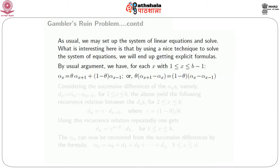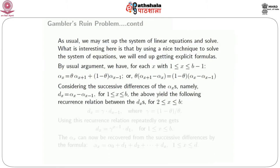To solve for the α_x's, we use a technique introducing successive differences of the α's. Let d_x denote α_x − α_{x−1}, defined for all x between 1 and b. The relation θ·(α_{x+1} − α_x) = (1−θ)·(α_x − α_{x−1}) gives that for successive d_x's with x between 2 and b, we have d_x = γ·d_{x−1}, where γ = (1−θ)/θ.